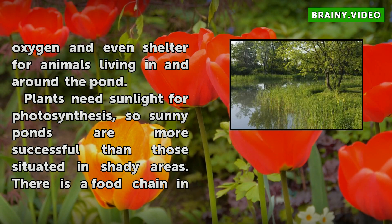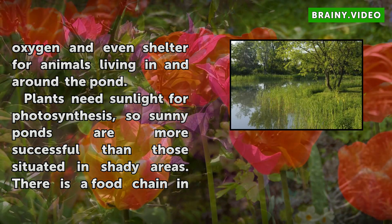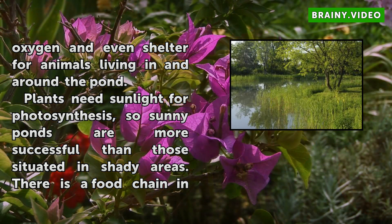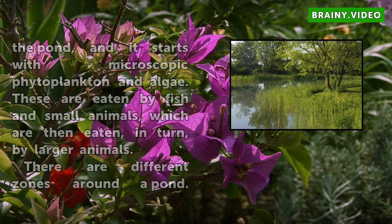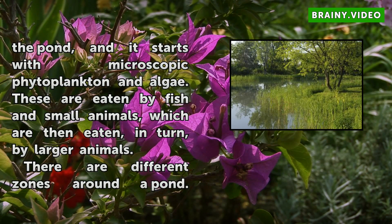There is a food chain in the pond, and it starts with microscopic phytoplankton and algae. These are eaten by fish and small animals, which are then eaten, in turn, by larger animals.